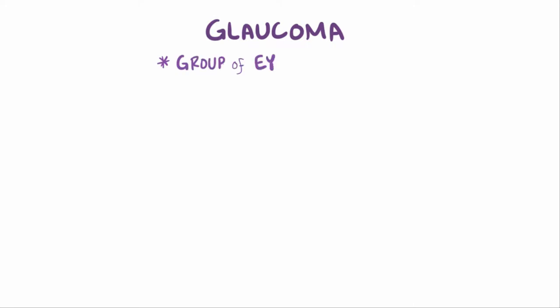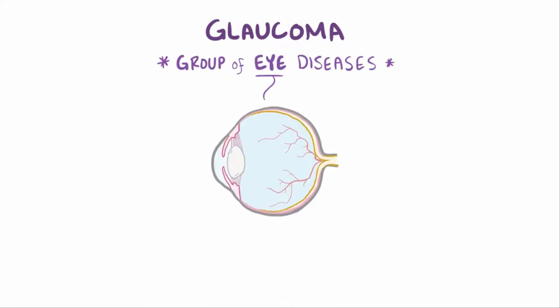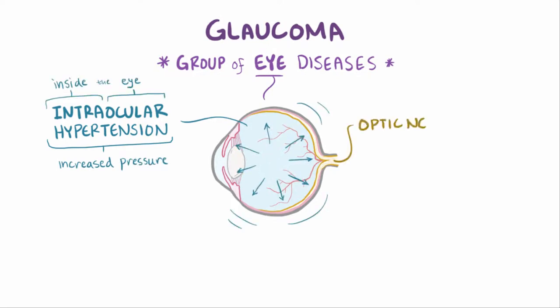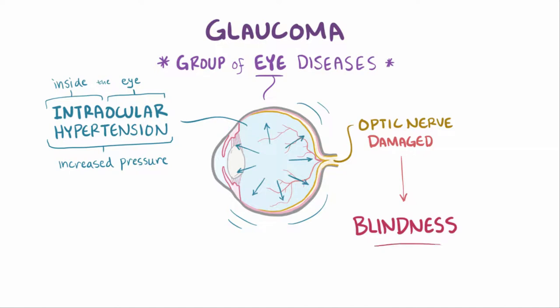Glaucoma is actually a group of eye diseases that are usually due to intraocular hypertension or increased pressure in the eye, which damages the optic nerve and if left untreated can lead to blindness.